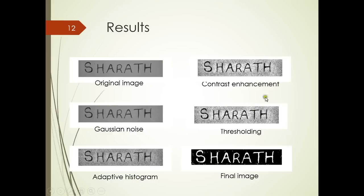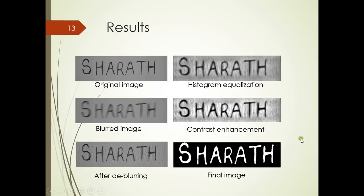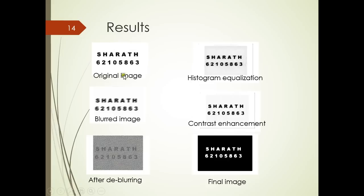Coming back here, I have shown the results for all cases: the directly captured image, the image from a camera, and the image that was blurred and then de-blurred. These are the various steps the image goes through before showing the output. The results include the directly captured scan, the camera-captured image, the blurred and de-blurred camera image, and the printed or scanned text that was blurred then de-blurred and had the final output taken.